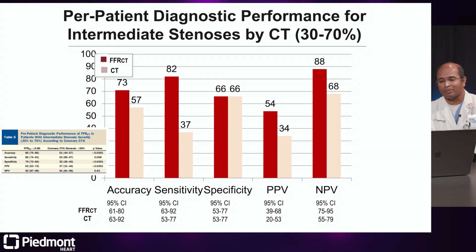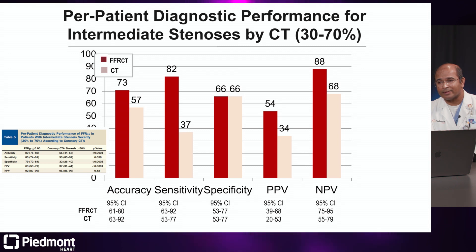The addition of FFR improves the accuracy of CT, and also improves diagnostic ability by combining anatomic CT testing with physiological FFR data. The Achilles heel of CT has been that with intermediate stenosis, there is overestimation of stenosis due to calcium, which could lead to calling more stenosis than actually exists. The addition of FFR helps improve diagnostic accuracy in this situation, as some studies have shown.